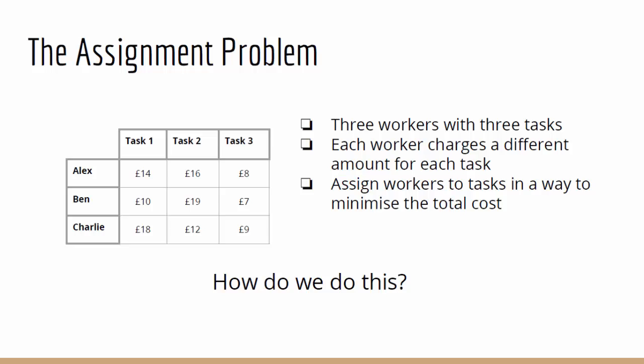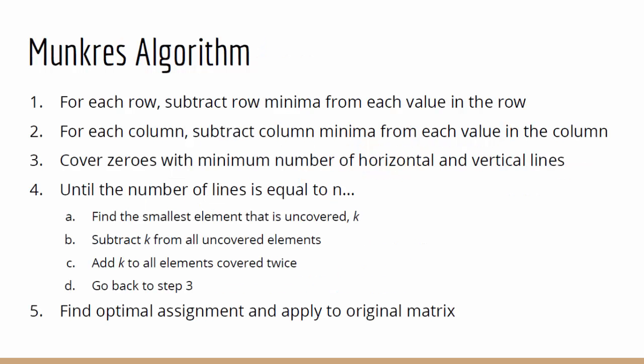This is where Munkres' Algorithm comes in. The first step is to check every row and find the minimum value in that row. Once you have it, you need to subtract this minimum value from every single value in that row.